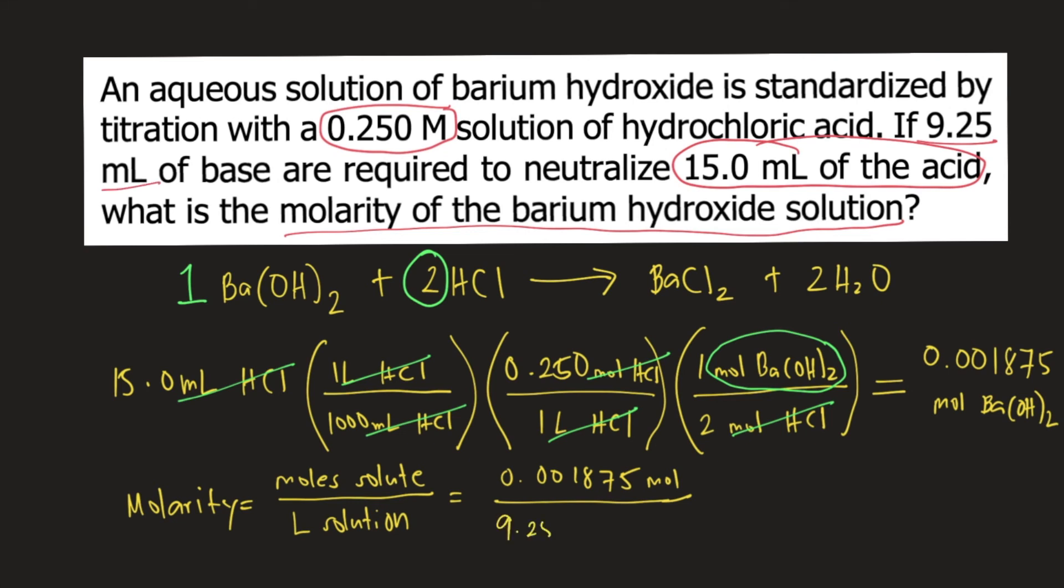So 9.25 mL, convert this to liters. We know that 1,000 mL is equal to 1 liter. So mL would cancel and our units would be moles per liter.